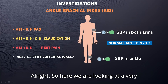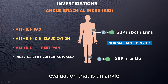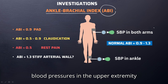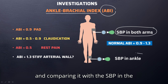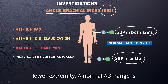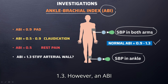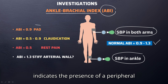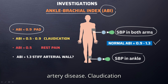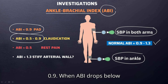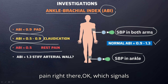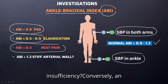The ankle-brachial index (ABI) is a very important diagnostic tool. It involves measuring the systolic blood pressure in the upper extremity and comparing it with the SBP in the lower extremity. A normal ABI range is between 0.9 to 1.3. An ABI value of less than 0.9 typically indicates peripheral artery disease. Claudication presents when ABI is between around 0.5 to 0.9, and when ABI drops below 0.5, patients may experience resting pain, signaling more severe arterial insufficiency.